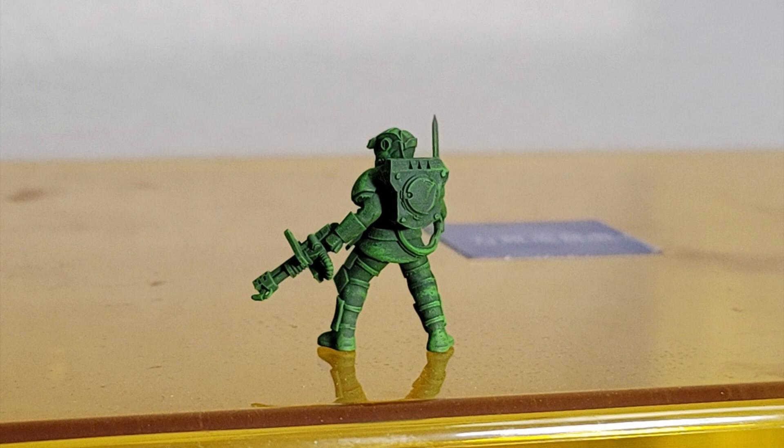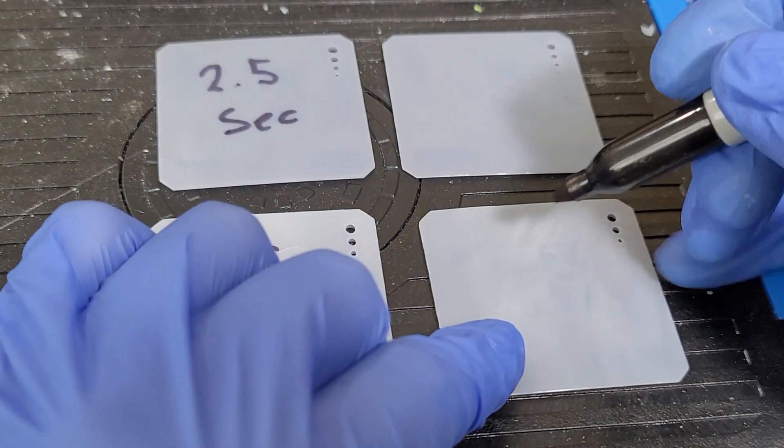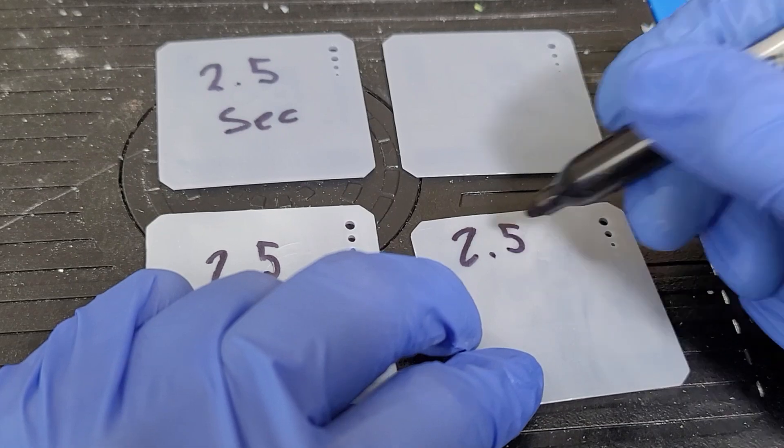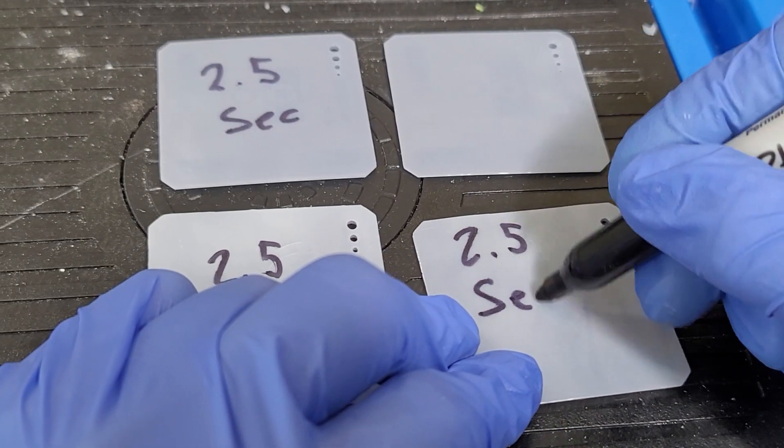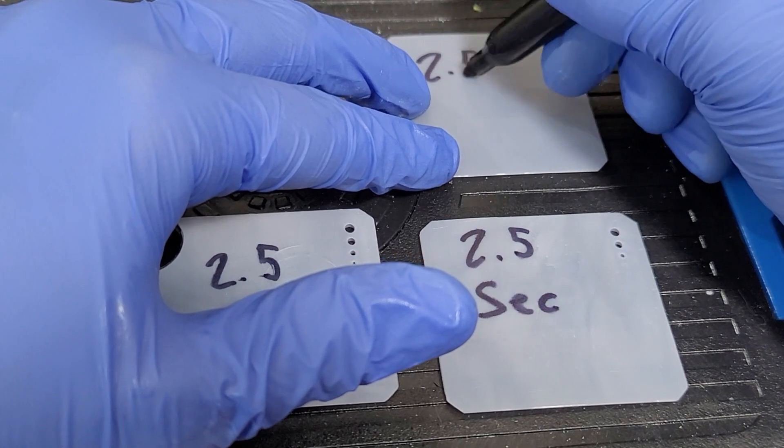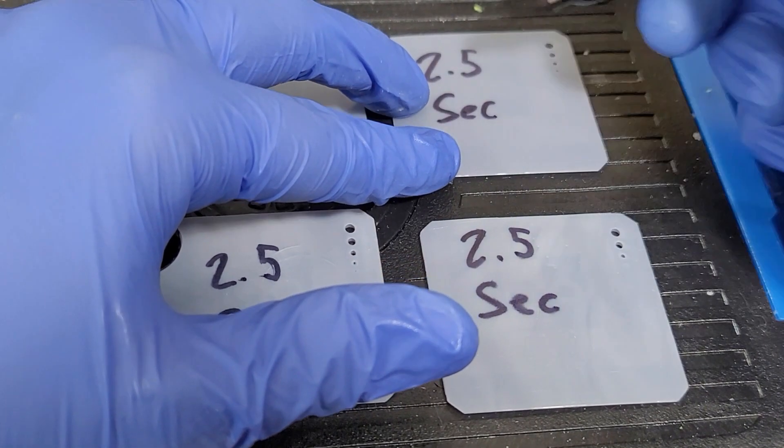But I already know that the sweet spot for my printer and the resin that I use for it is at 2.8 seconds. Yours could be way less, or yours could be a little bit more. It just depends, again, on your settings with the resin that you're using, and the printer that you're using as well. So again, work your way at the top going downward, so that way you're not going misprint, misprint, misprint, and you have to clean up the vat constantly, because you don't want any pieces at the bottom of that vat, because then you could damage your FEP sheet and possibly your screen.